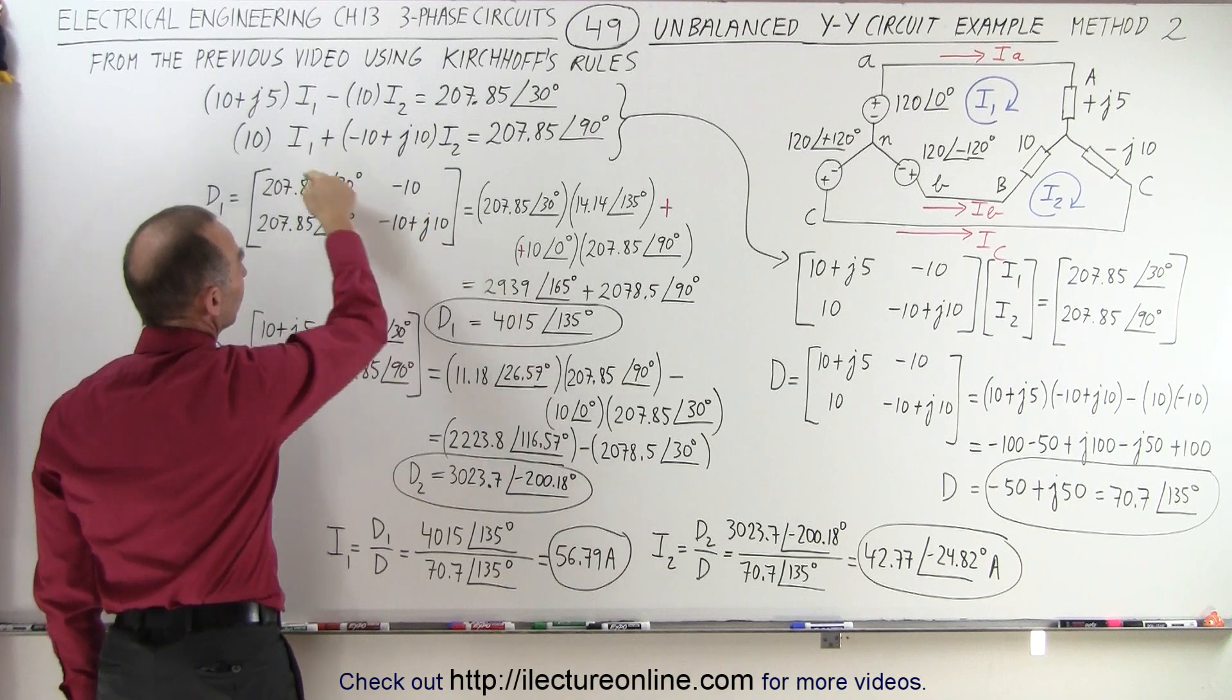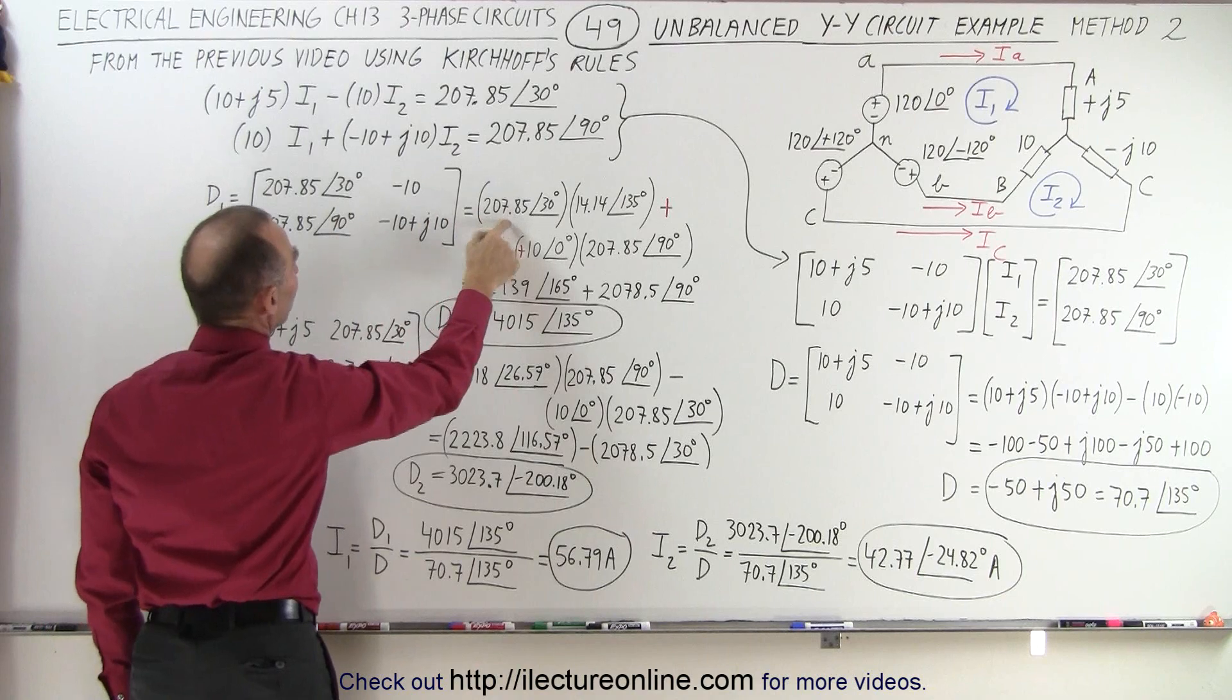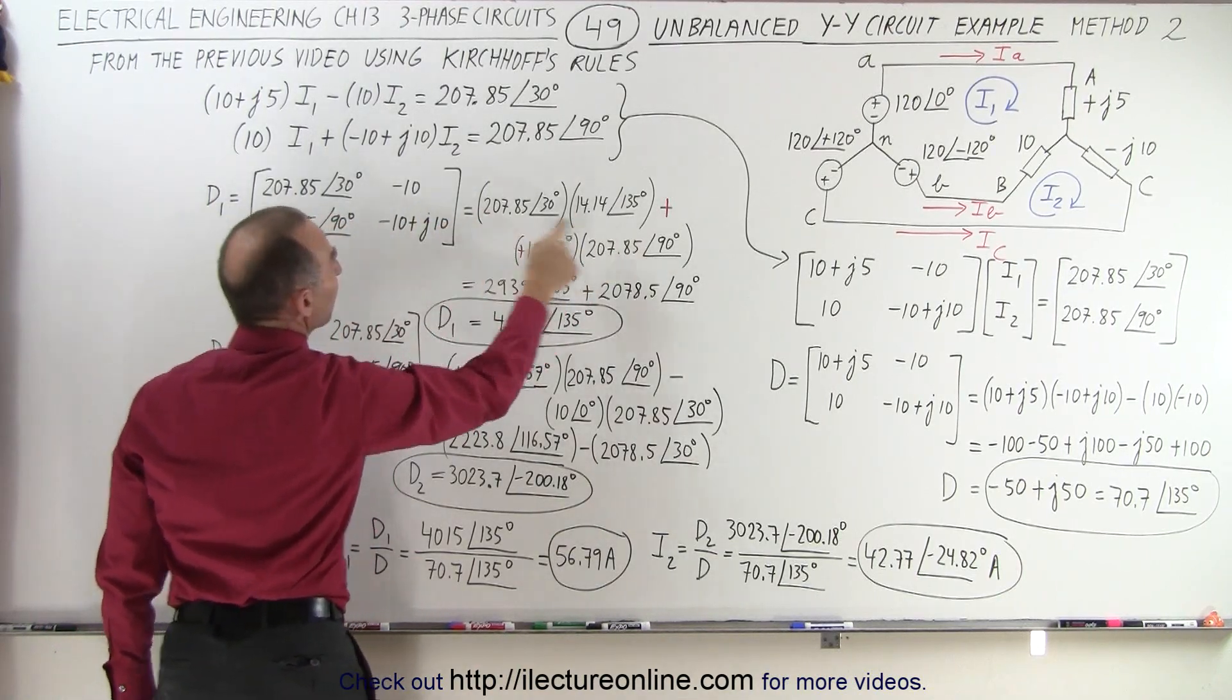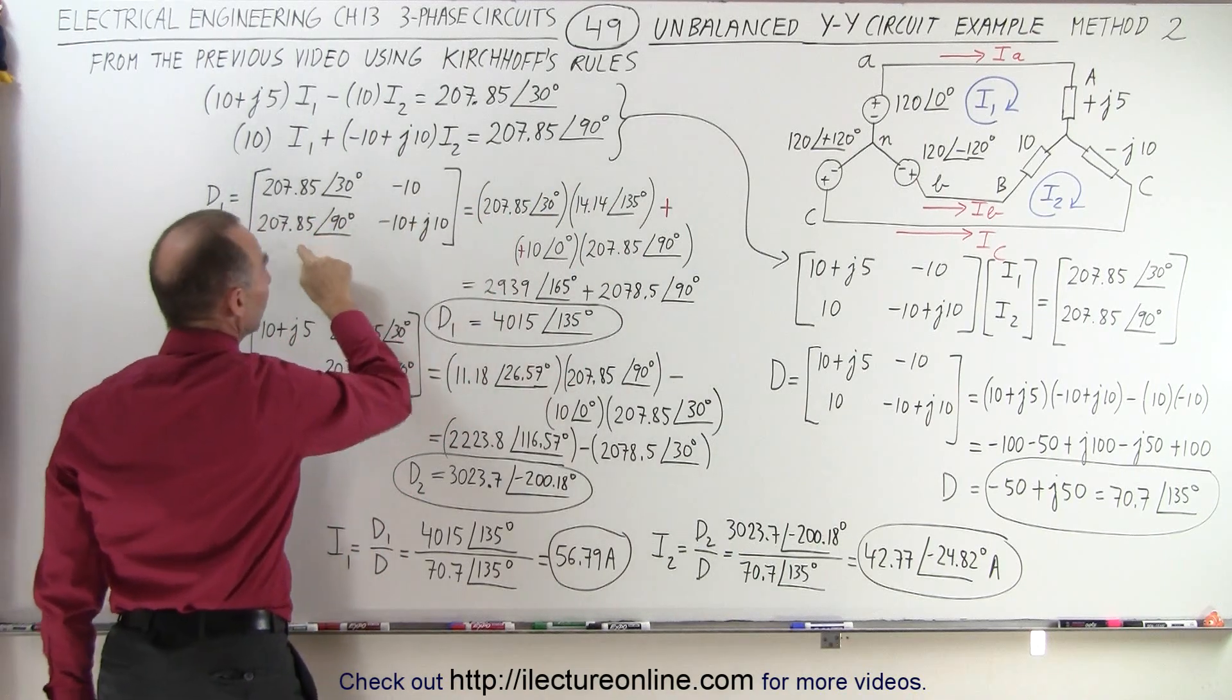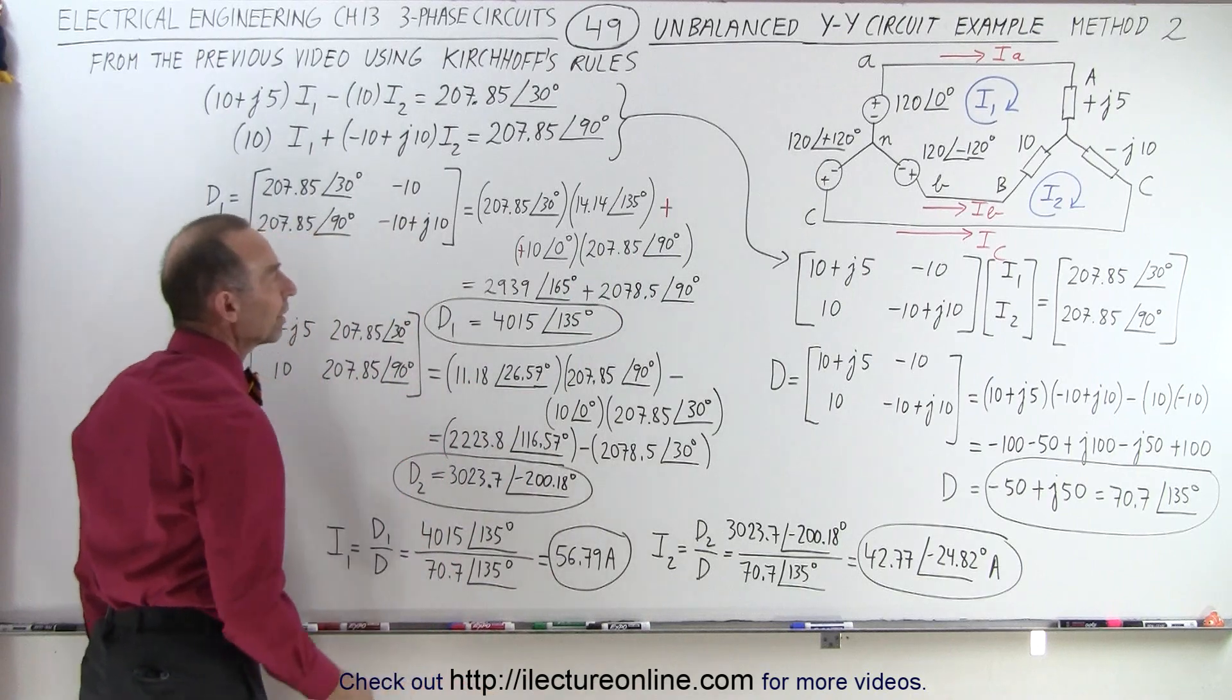We multiply these two terms together and subtract when we multiply these two terms together. So we have this multiplied times this converted to the magnitude and phase angle format minus this times this, which is a minus 10, times 207.85 with a phase angle of 90 degrees.